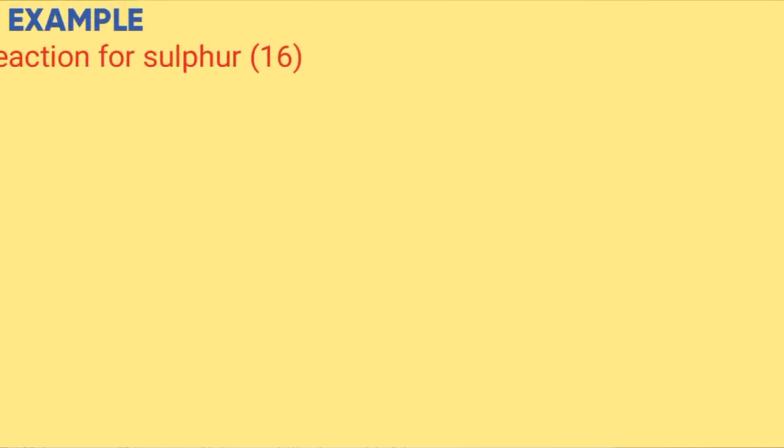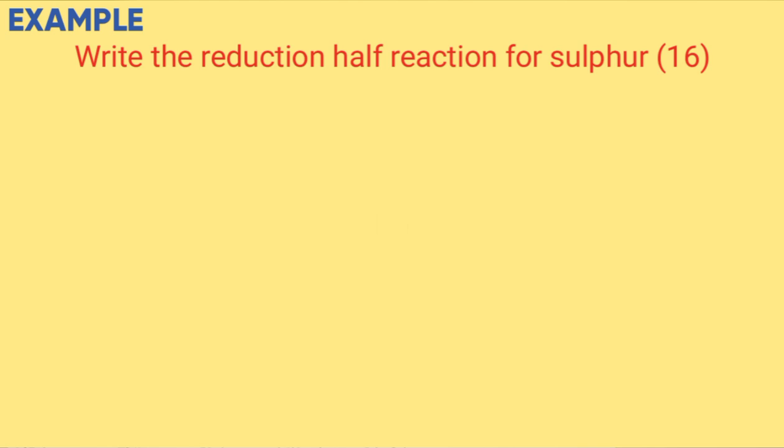For example, I'm told write reduction half reaction for sulfur. It will be S + 2e^-, which are gained, 2.8.6, arrow S^2-.